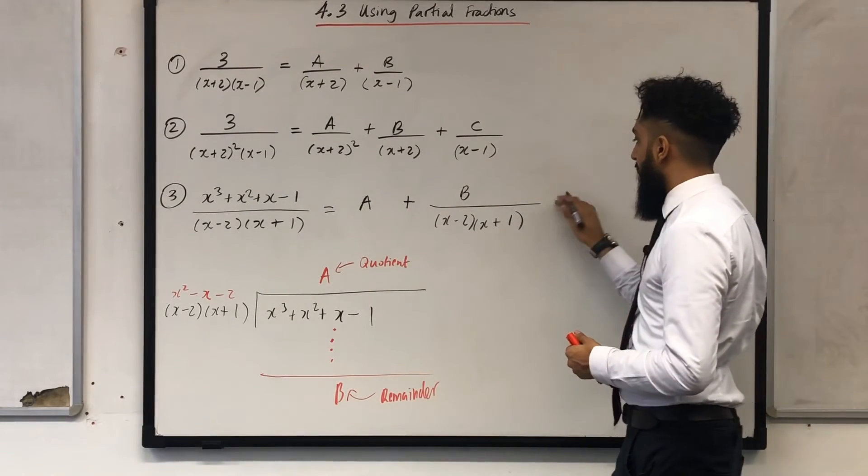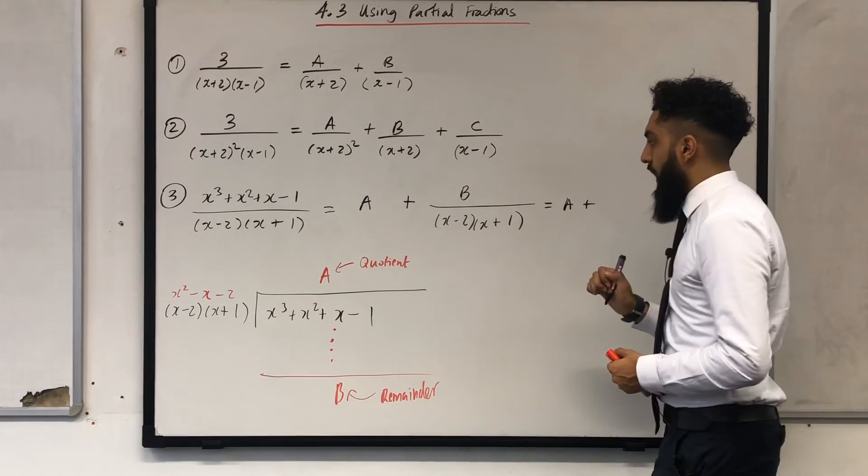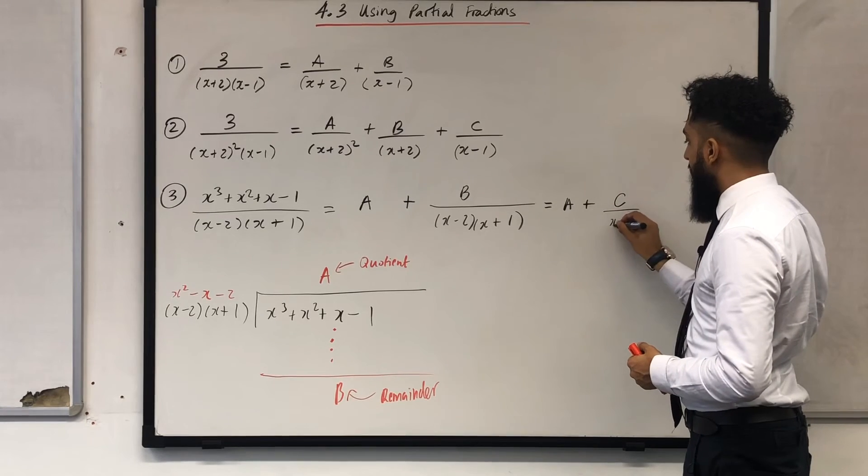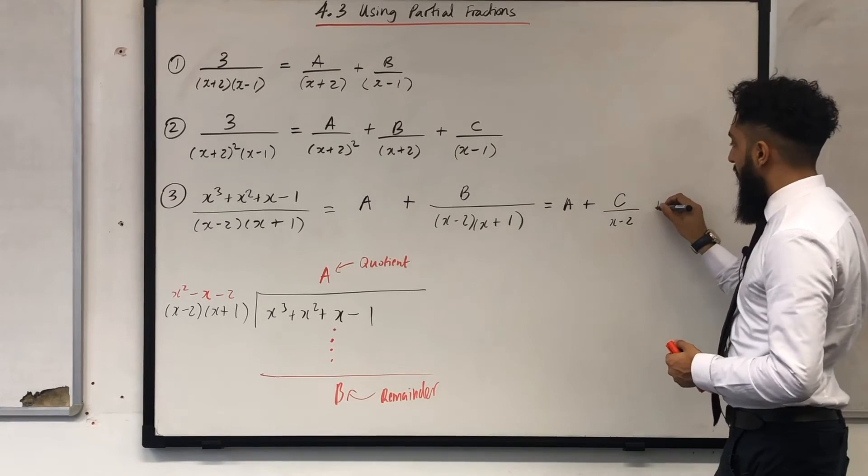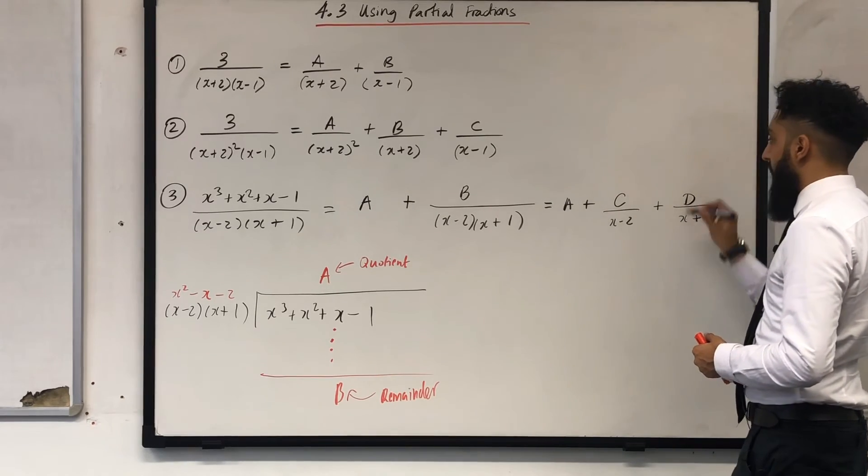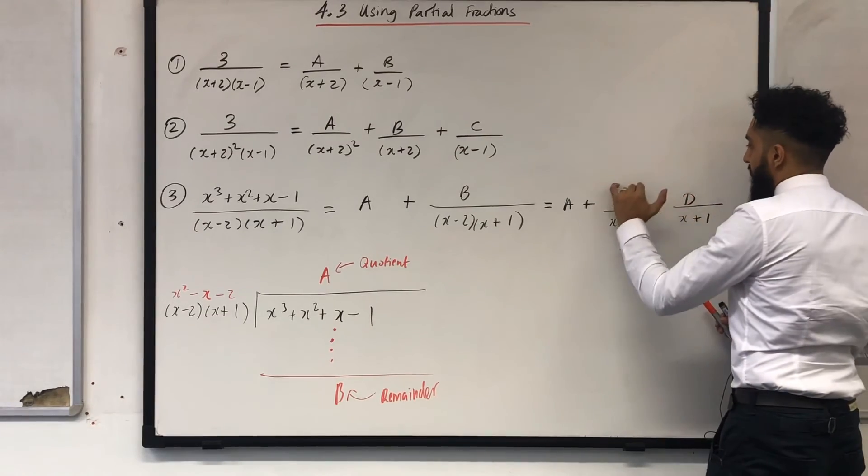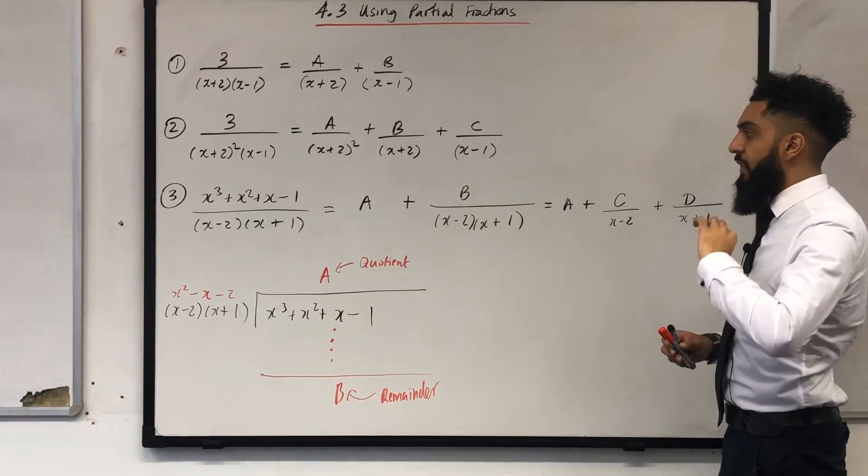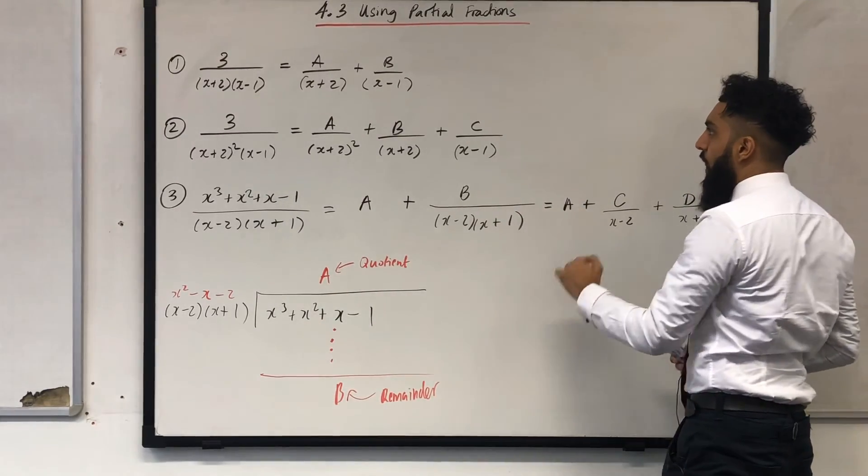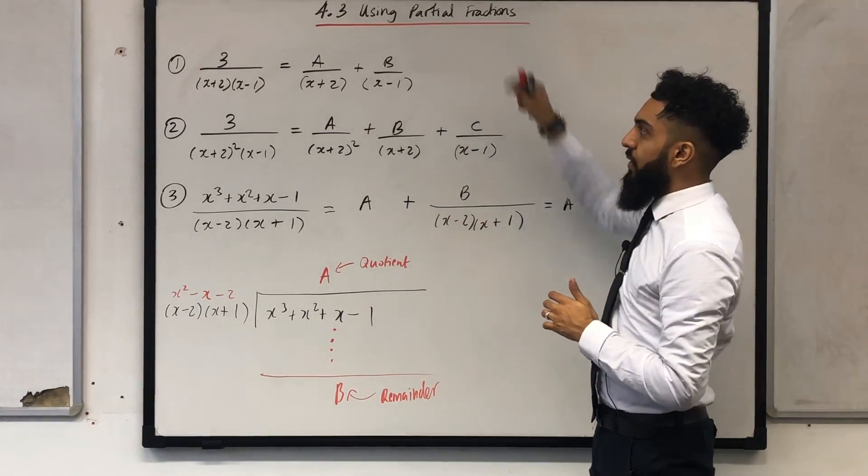So if you were to do something like that you would have A plus, now I'm going to introduce a new variable C all over x minus 2 plus D all over x plus 1. So another new variable D. And then you just work out C and D by your standard method of substitution. So this is a quick recap of partial fractions. We'll be using this particular concept in section 4.3 using partial fractions.